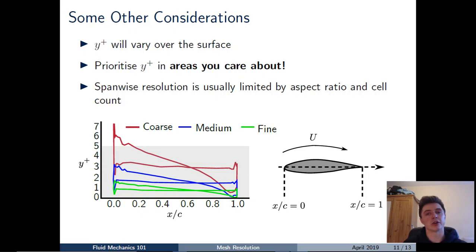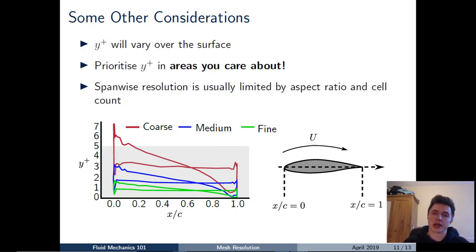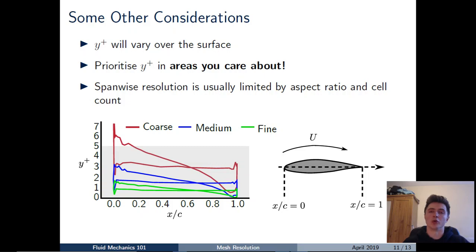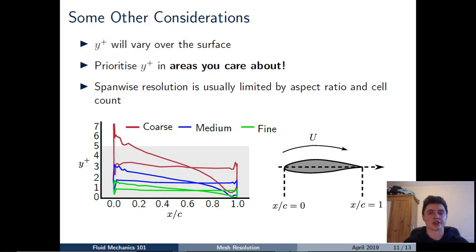We may also want to consider refining in other directions — for example, along the span. However, boundary layer gradients are steepest in the wall-normal direction in most cases, which is why we prioritise wall-normal refinement first. Span-wise resolution is also something to consider as a separate investigation in your CFD simulations.